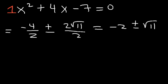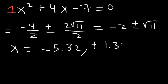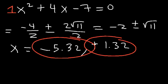If you have your calculator, you can get the decimal values. The first answer is negative 2 minus the square root of 11, which is about negative 5.32. The second answer is negative 2 plus square root of 11, which is positive 1.32. So as you can see, we got two real solutions — one is positive, one is negative. Anytime the discriminant is greater than 0, you will always get two real solutions.